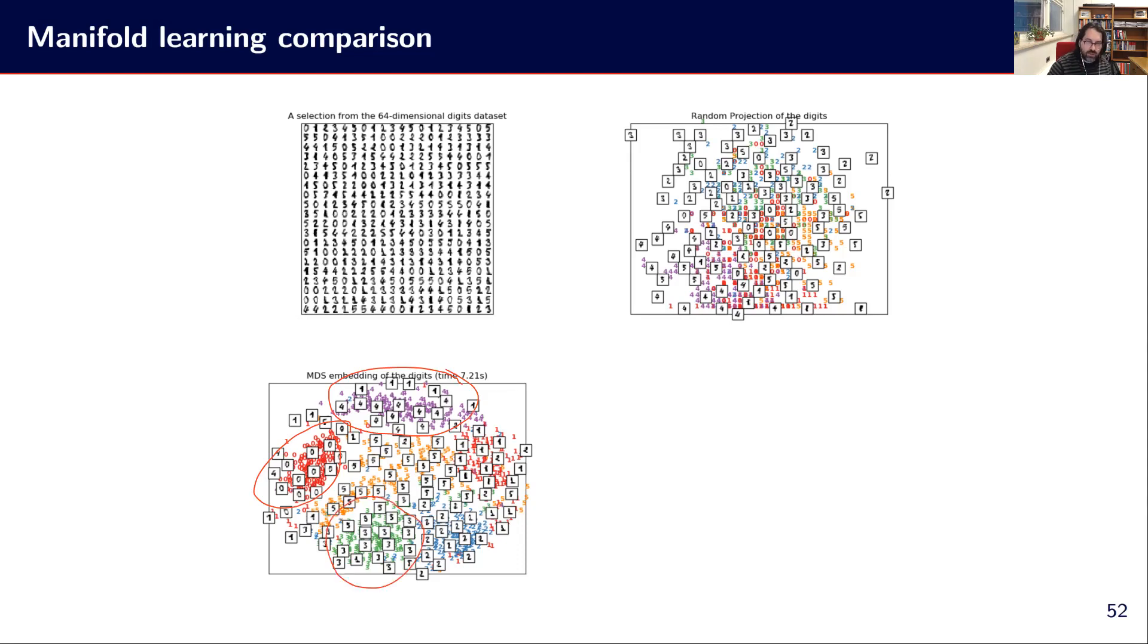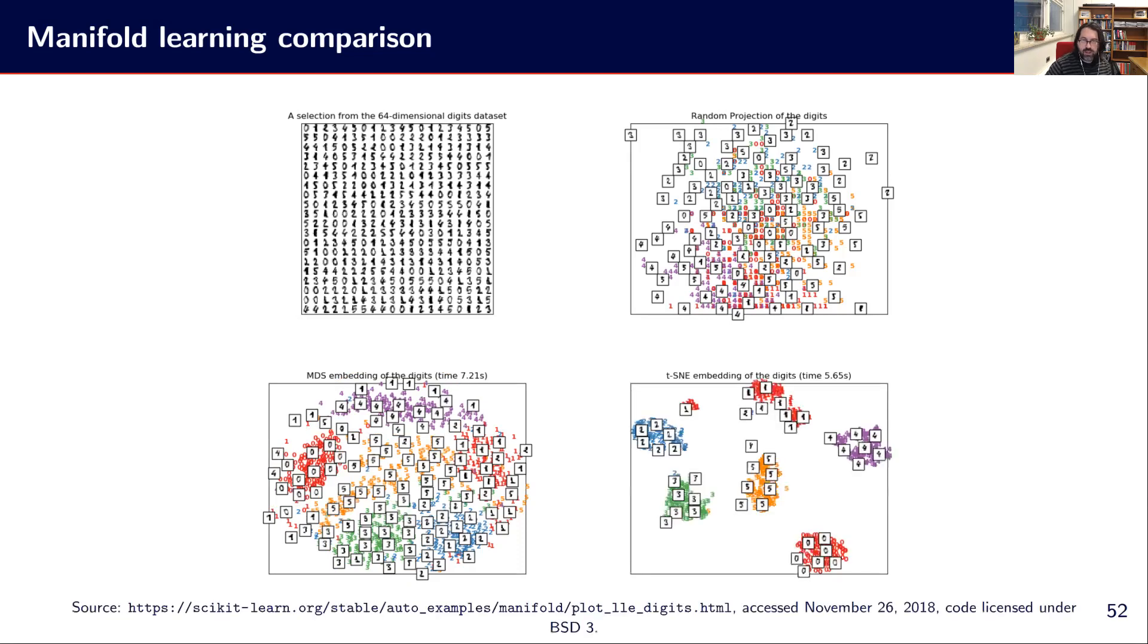We are able to learn something interesting. And with t-SNE, even better. We have really clear clusters without using the labels where the projection is able to differentiate between these different characters that we are using as input.